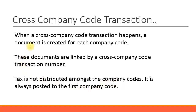To recap: whenever you have a cross-company code transaction, at least one document is created for each company code, and these documents are linked by a cross-company code transaction number. The tax amount is paid by the first company and is not distributed between the two companies. However, you can distribute the expenses or revenues. You will see a real example in the next slide.